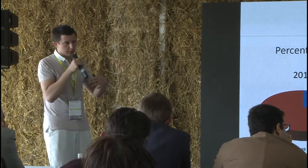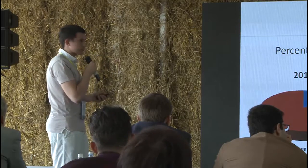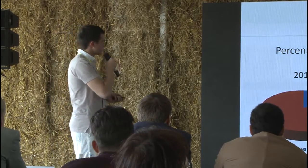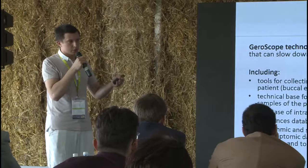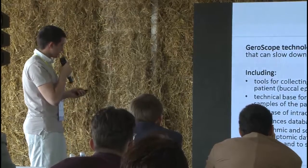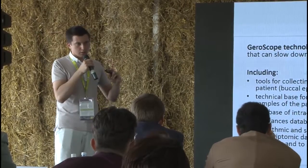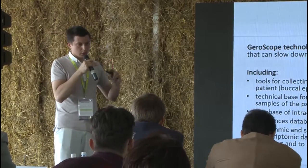Please describe your product. The description results from what I'm speaking about. The product includes the first phase: gathering biological samples from the patient, using a technical database for genetics analysis, a very important database on signal pathways which are involved, and also medications which can be anti-aging drugs that can potentially slow down these processes. And algorithms in accordance with which we can match those structures with each other.